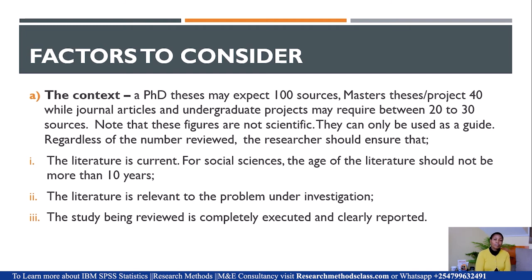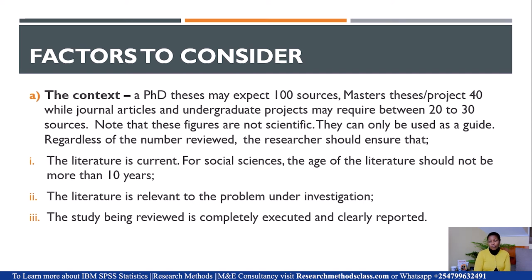Number one is the context. Why are you reviewing the literature? Is it for a PhD thesis? Is it for a master's thesis, project, or dissertation? Is it for a paper? Is it for an undergraduate project? A PhD may expect 100 sources; masters may expect between 40 to 50; general papers and undergraduate projects may require 20 to 30. Note that these figures are not scientific — they can only act as a guide as you write your paper, thesis, dissertation, or project.